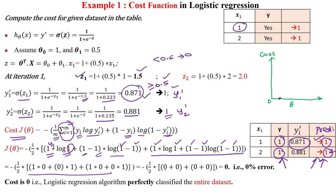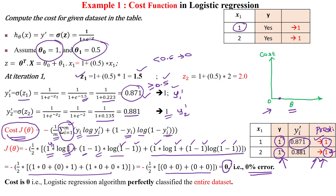When applying all the values, we finally get 0, meaning the cost is 0. A cost of 0 means 0% error in our algorithm. For the given theta values — theta 0 equal to 1 and theta 1 equal to 0.5 — we got cost equal to 0. Since cost is 0, the accuracy of our model is 100%, so there is no need for gradient descent. The classifier has perfectly classified the given dataset which has two samples.